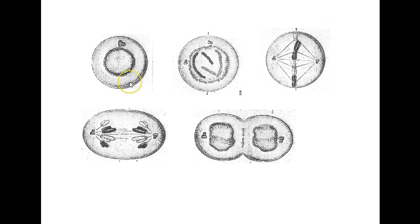Here we see another set of diagrams. In the upper left-hand corner you have a solid intact nucleus representing interphase. Moving to prophase: the chromosomes have formed from the chromatin and the nuclear envelope is dissolving. The next phase is metaphase: the chromosomes are lined up across the middle of the cell, and the spindle fibers are attached to the centromeres from either side.